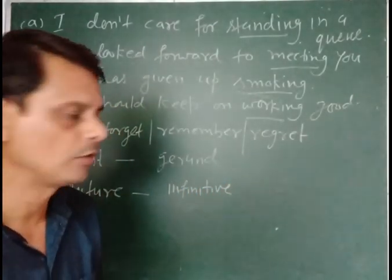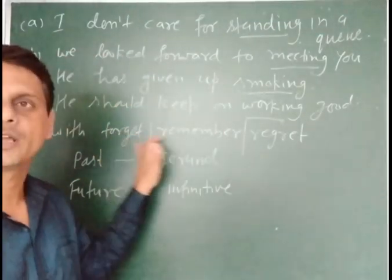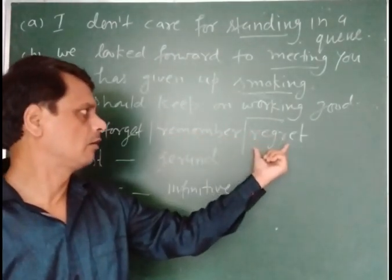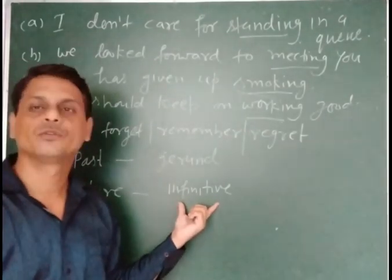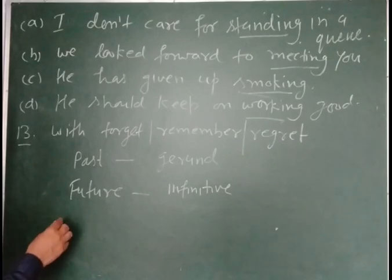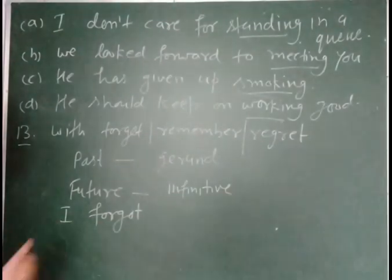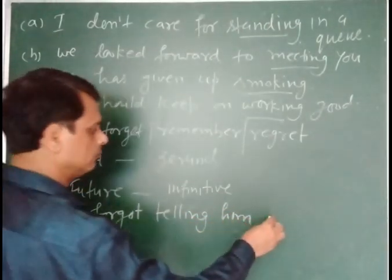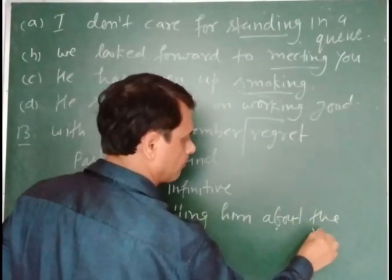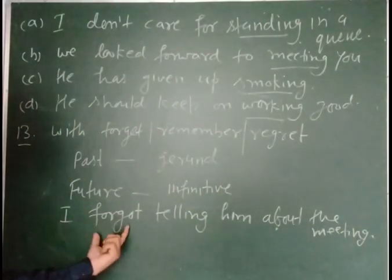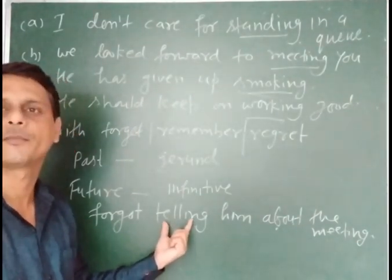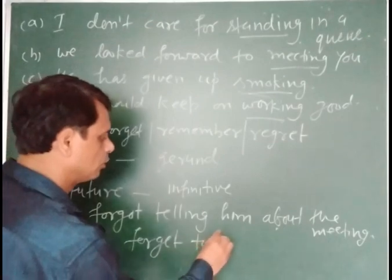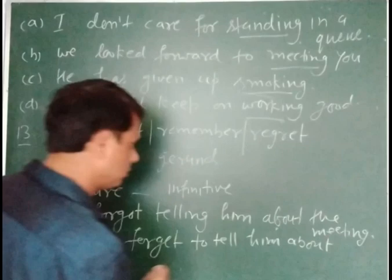Infinitive means 'to plus verb'. If forget, remember or regret refers to the past, we use gerund. If forget, remember or regret refers to the future, we use infinitive. For example: I forgot telling him about the meeting — past, so gerund. Don't forget to tell him about the meeting — future, so infinitive.